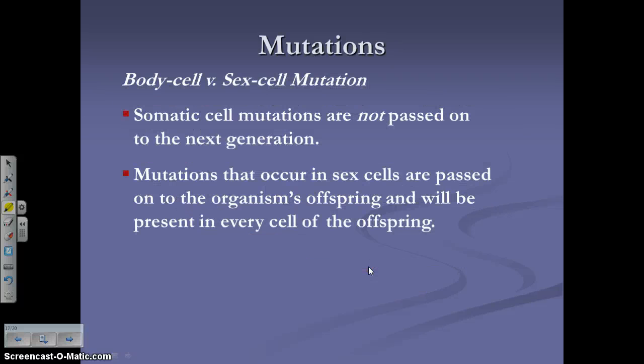Somatic cell versus sex cell mutations: an error in mitosis can't be passed down, but an error in meiosis can be. Mitosis happens in somatic cells, which you don't pass to your offspring. The only cells you give directly to your offspring are egg or sperm, produced by meiosis. So somatic cell mutations are not passed on, but mutations in sex cells are passed on to the organism's offspring if that egg or sperm is fertilized — then every cell of the offspring carries that mutation.